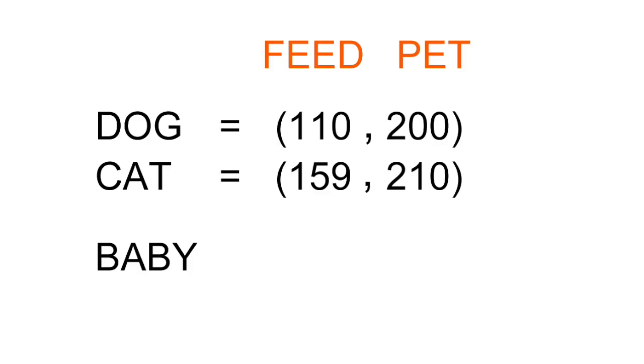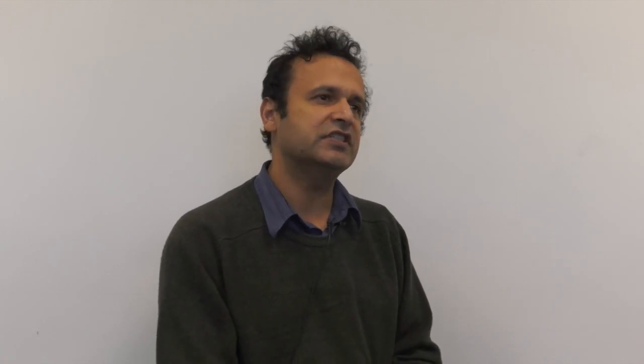On the other hand, if you take another word with a different meaning, a word such as 'baby,' it would occur frequently with 'feed' but not frequently with 'pet.' So this way you see that the sequences of numbers captures something about the meaning. And that idea — this is the idea that underlies distributional semantics.